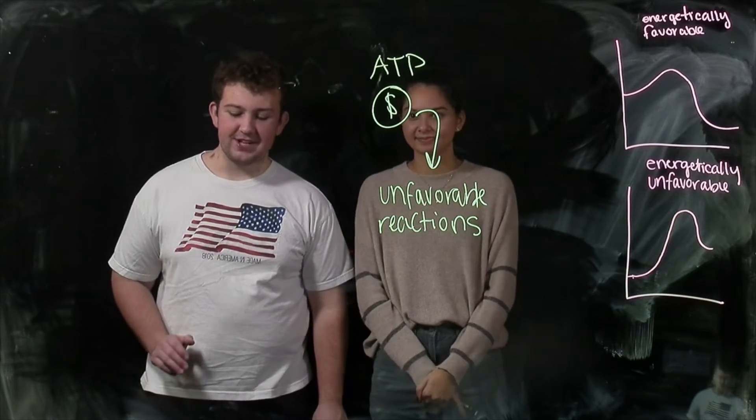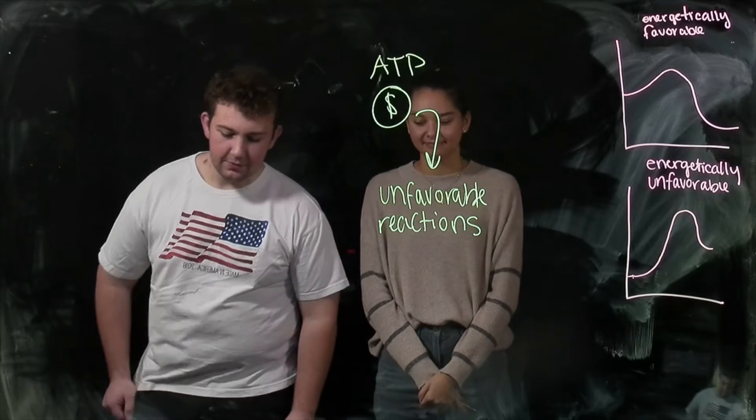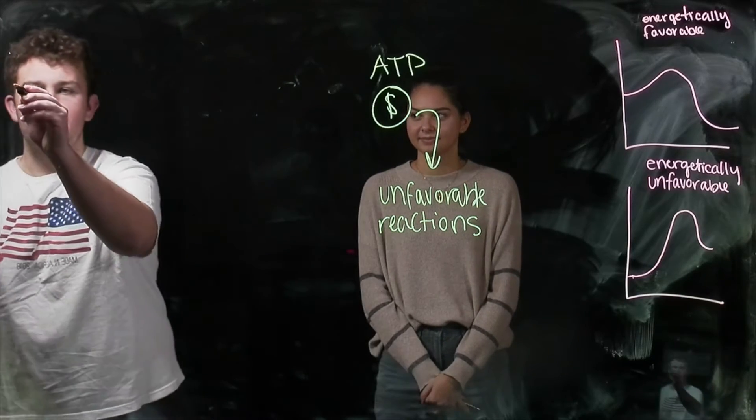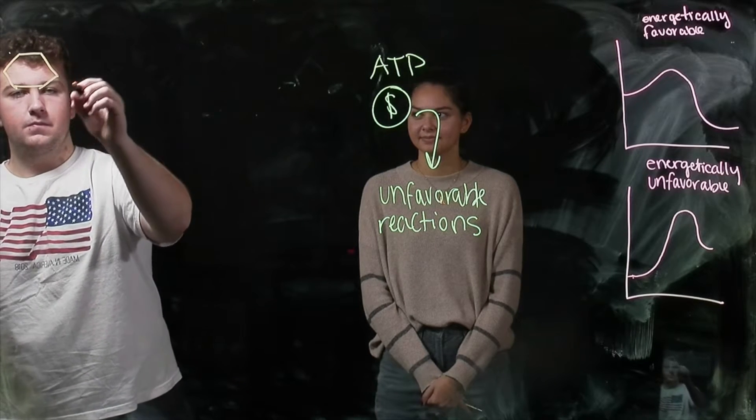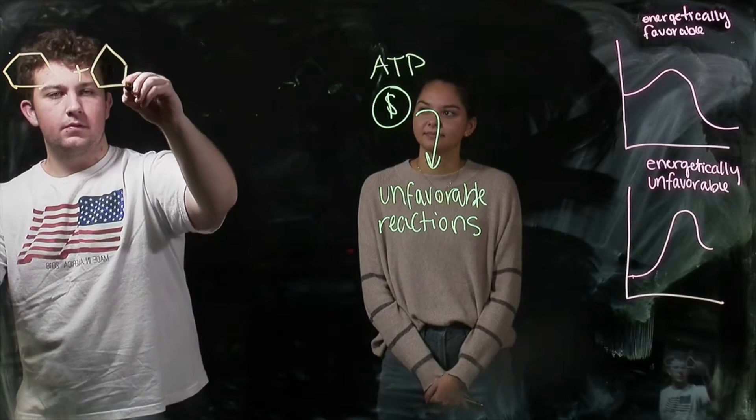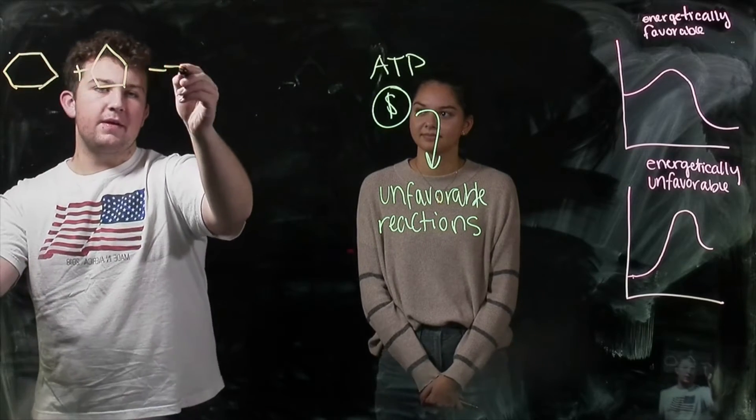Now, we're going to talk about a very energetically unfavorable reaction, which is where we combine glucose and fructose to make sucrose. So here we have glucose and fructose, and we are going to try and make sucrose.